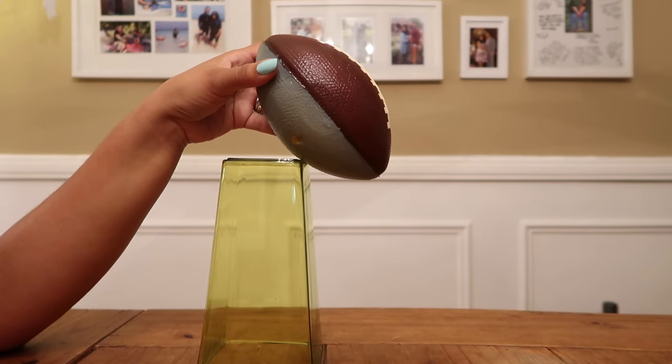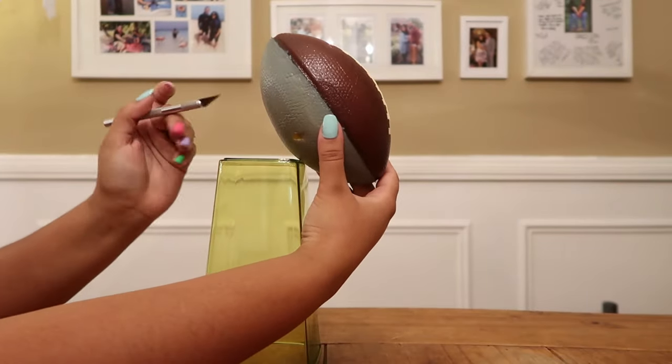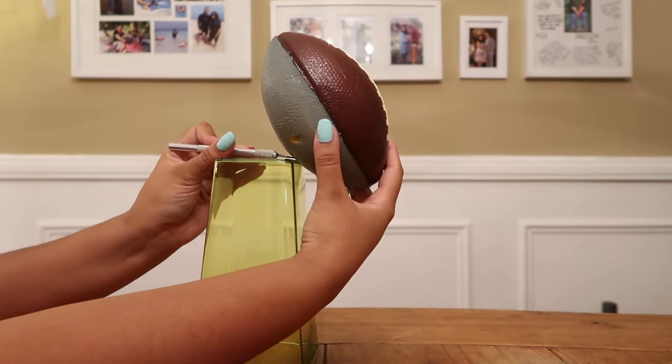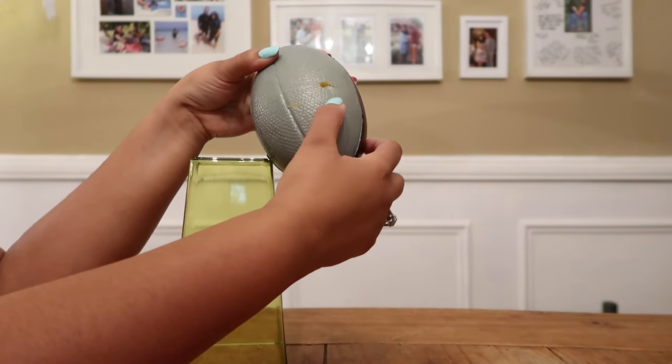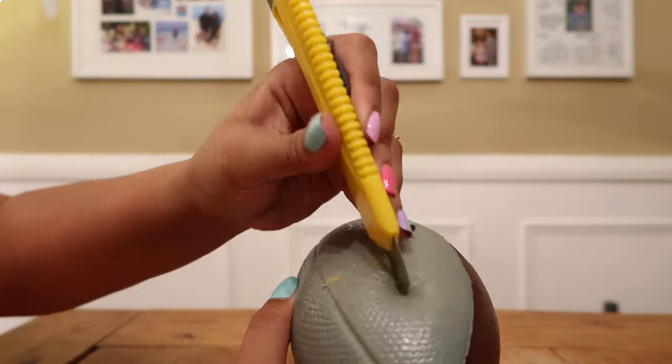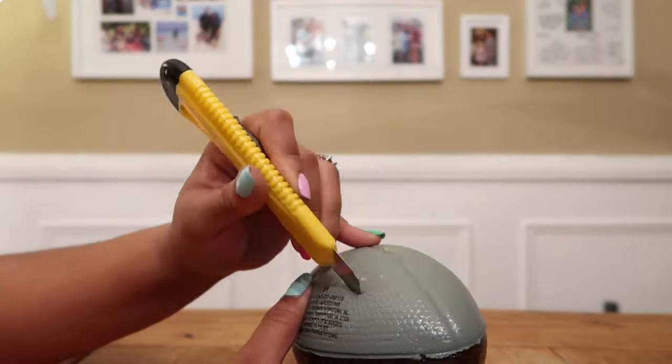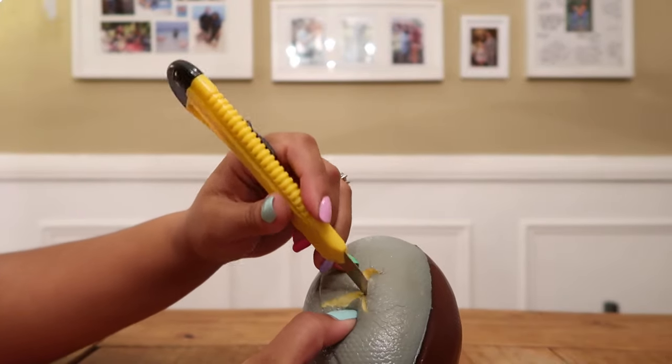Holding your football in place you're going to go ahead and make a slight mark, going to go ahead and carve out a small piece or a rectangle from your football. You can just poke it just to make sure that you've cut out those foam spots.